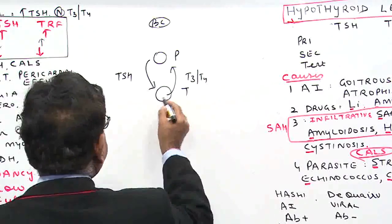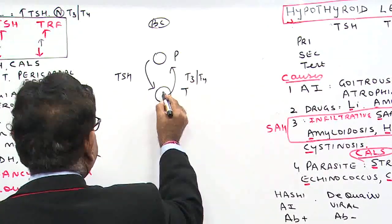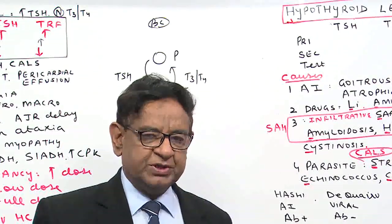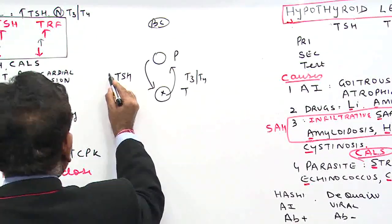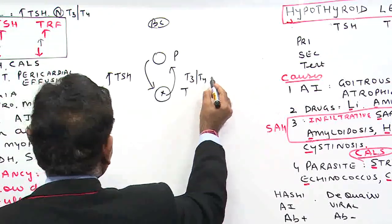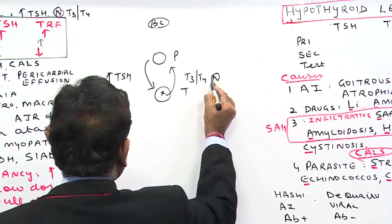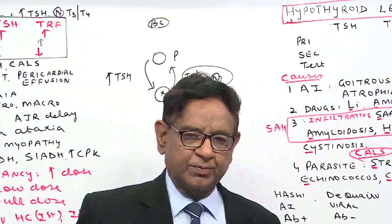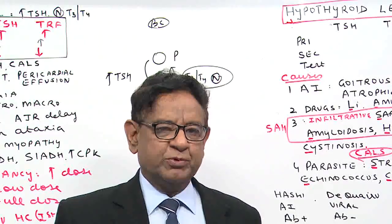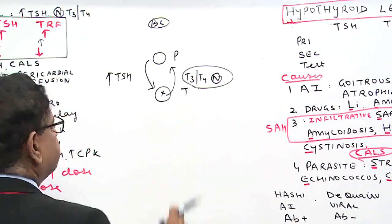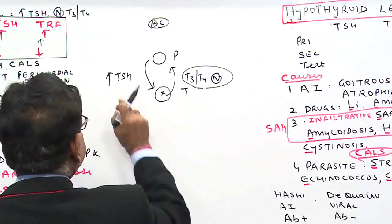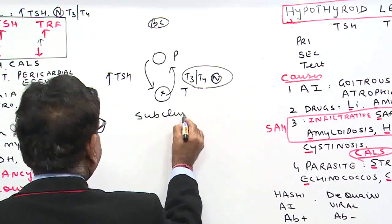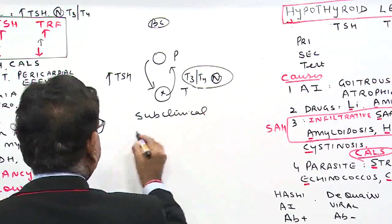Suppose the gland is not working properly — the gland will produce less T3 and T4. The body will try to secrete more and more TSH, and this increased TSH will try to maintain normal T3 and normal T4. So this is the initial state of hypothyroid where T3 and T4 are normal but TSH is increased — this is known as subclinical hypothyroid.